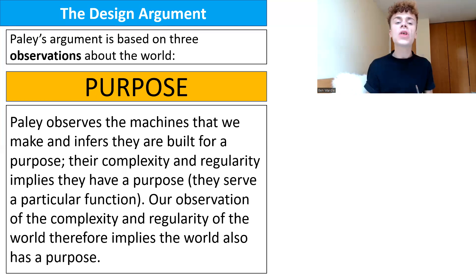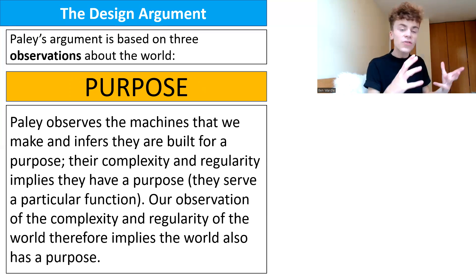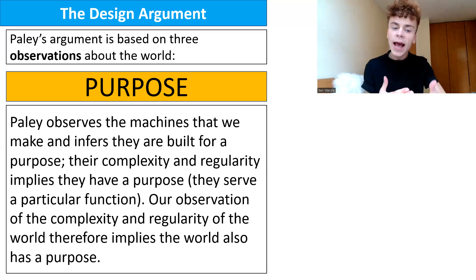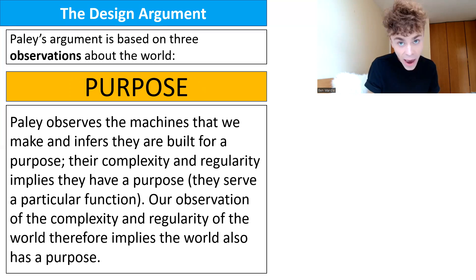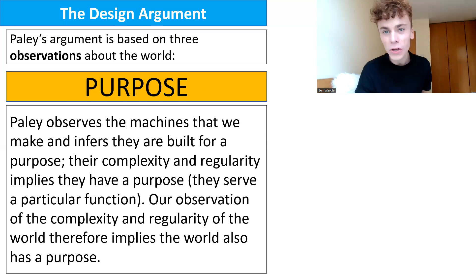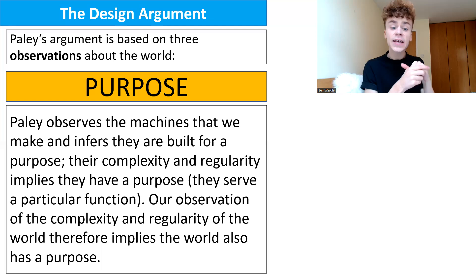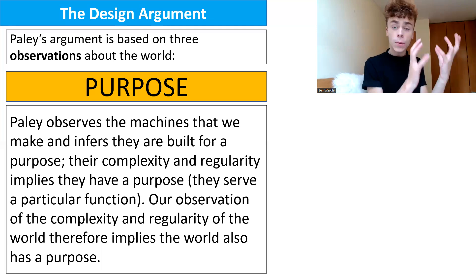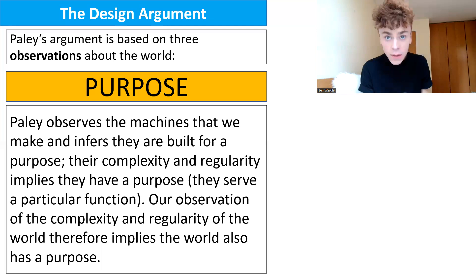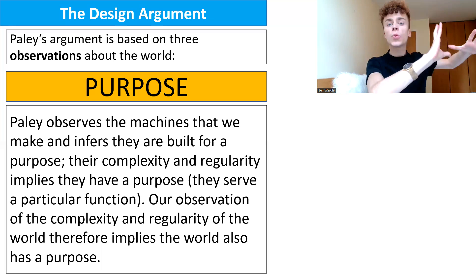Finally, he observes purpose. Paley observes the machines we make and asserts they are built for a purpose. Their complexity and regularity implies they have a purpose — they serve a particular function. A very advanced machine in Paley's day was the watch, built for the purpose of telling the time. Our observation of the complexity and regularity of the world therefore implies the world also has a purpose. Because things are so complex and regular, there must be a purpose, and he makes the link between the machines of his day and the world as a whole.